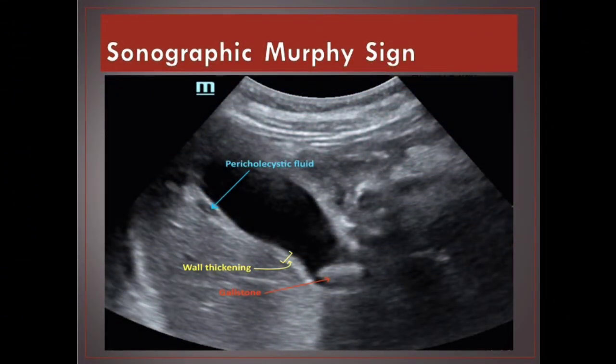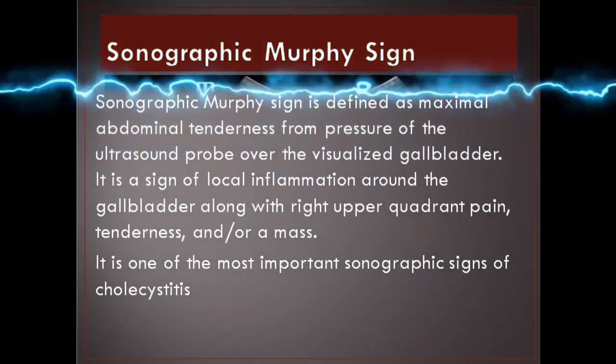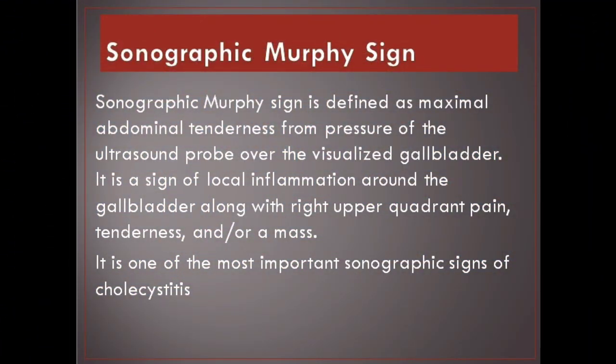Sonographic Murphy Sign. The sonographic Murphy Sign is defined as maximal abdominal tenderness from pressure of the ultrasound probe over the visualized gallbladder. It is a sign of local inflammation around the gallbladder along with right upper quadrant pain, tenderness, and/or a mass. It is one of the most important sonographic signs of cholecystitis.